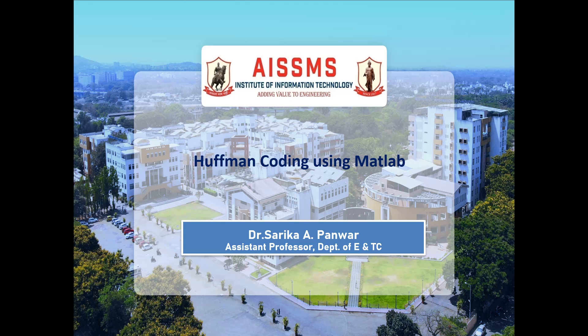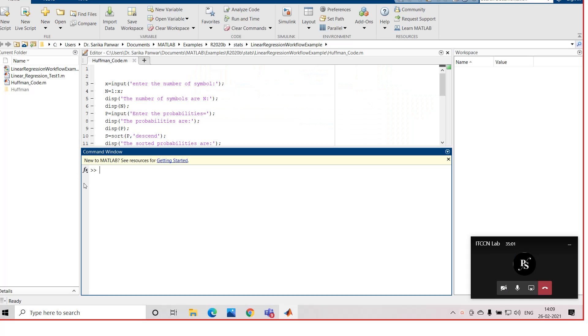In our previous lectures, we have already discussed one numerical based on Huffman coding where we considered five symbols and calculated the corresponding variable length source code. Considering the same numerical, now we will write one program in MATLAB for Huffman coding.